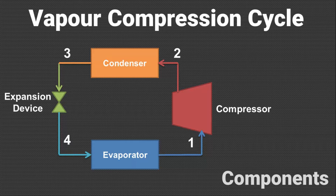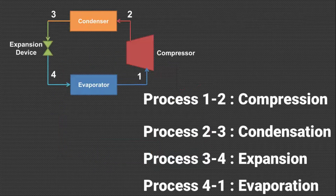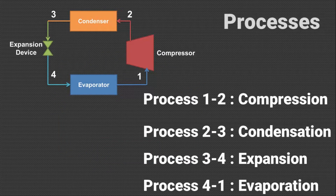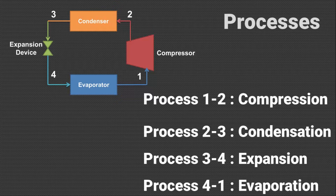Let us discuss the processes involved in the VCR cycle. The first process is 1 to 2, compression, in which the refrigerant vapors coming from the evaporator are compressed in the compressor to high pressure vapors. These refrigerant vapors are then condensed in the process of condensation, shown from 2 to 3. In this process, the refrigerant is condensed in the condenser and releases its heat to the cooling media, which may be cooling water or air.